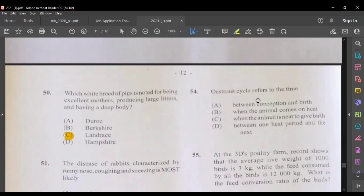Question 54, estrous cycle refers to the time between conception and birth? No. When the animal comes on heat? That's not correct. When animal is near to give birth? No. So the answer should be D, between one heat period and the next.